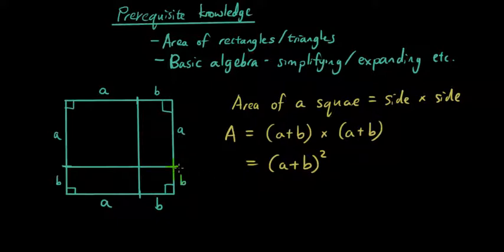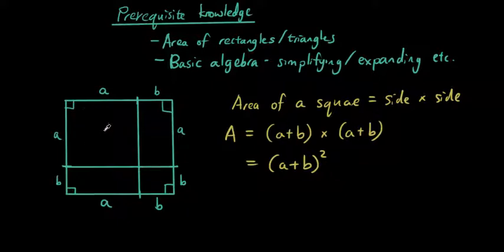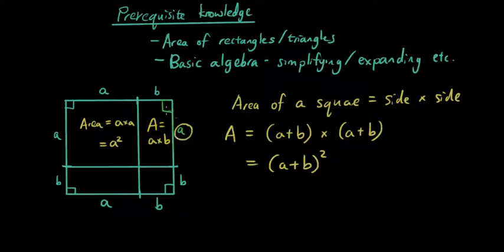Now let's look at the area of each of the smaller sections. This first section is a square with side A, so the area equals A times A, which is A squared. The area of this section is A times B — length times width for a rectangle. And then the area of this section is A times B again. The area of this last section is B times B, which is B squared.